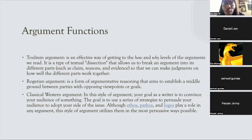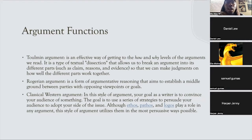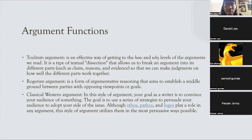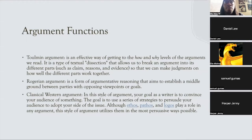The Toulmin argument is an effective way to understand the how and why levels of an argument. It goes into sections — claim, reasons, and evidence — so you can understand how things work in context with each other. Rogerian argument is a form of argument that aims to establish a middle ground, allowing you to look at both parties. This often comes up in switch-side debate or your 'we meet' arguments.